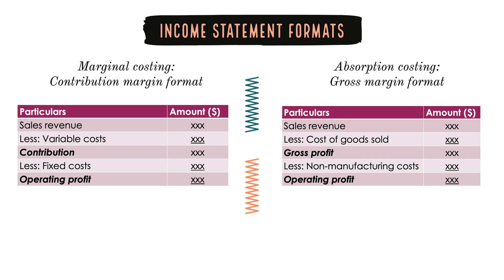Next, let's move on to the absorption costing income statement format. Again, we start the income statement from sales revenue and deduct cost of goods sold from the sales revenue. Cost of goods sold includes all manufacturing costs, irrespective of whether they are variable or fixed in nature. So we start with sales revenue and deduct cost of goods sold to arrive at gross profit.